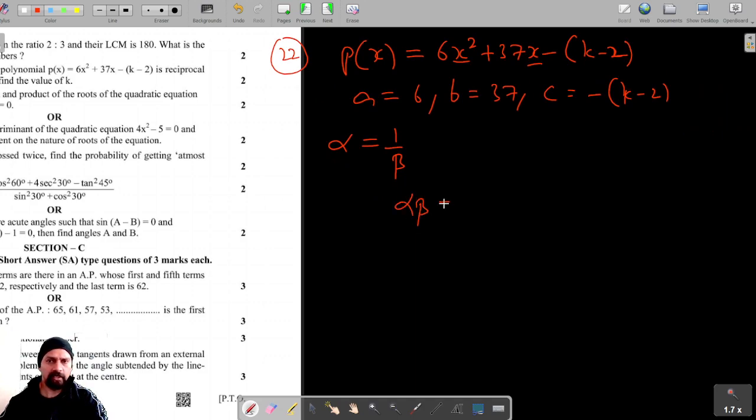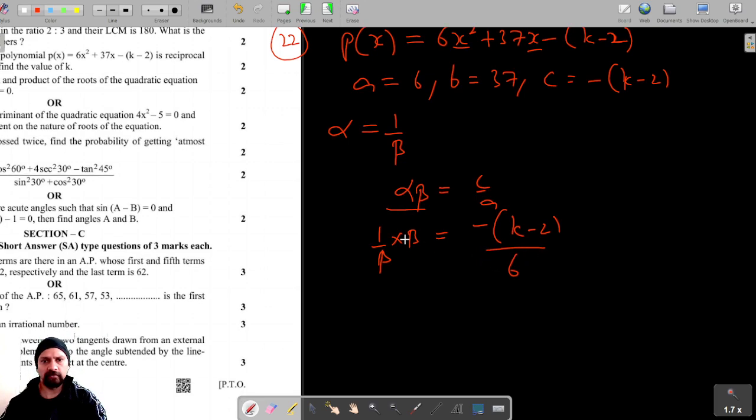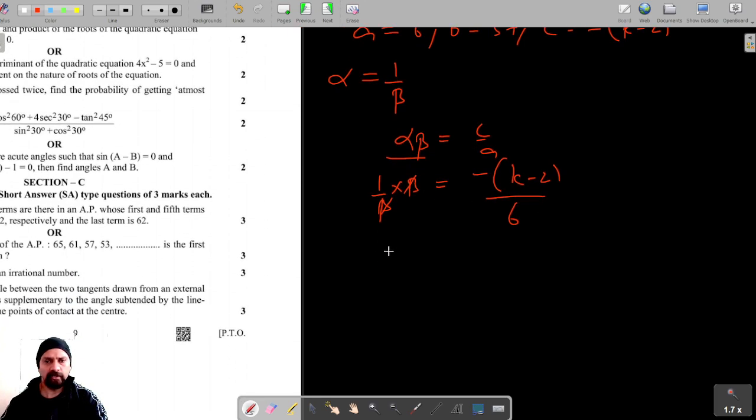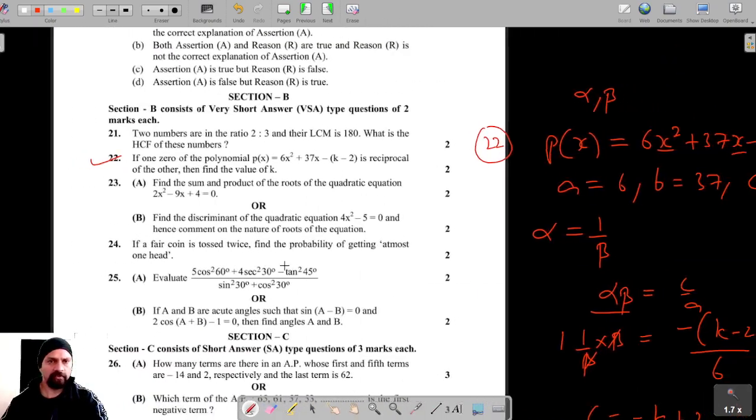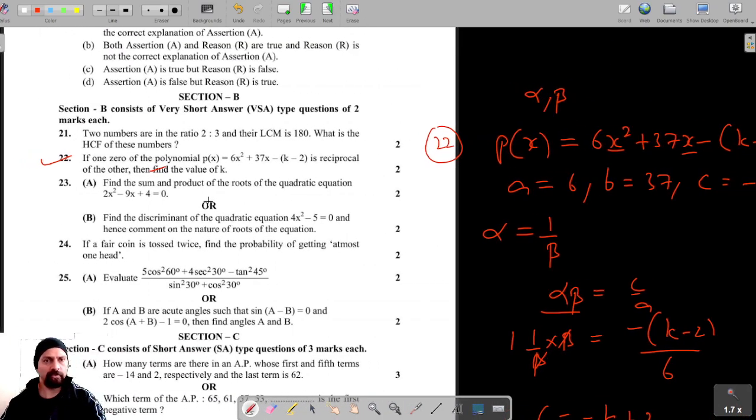Now we know that alpha times beta is c/a, so alpha is 1/beta. c is -(k-2)/a which is 6, so this equals 1, which gives us 6 = -k + 2, so -k = 4, which gives us k = -4. So the value of k is -4 for question number 22.